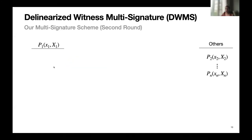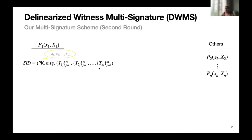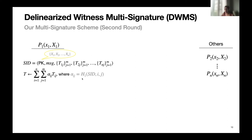The second round works as follows. Each party generates the session ID of the signing process, which consists of the public keys of the signers, the message to be signed, and all the pre-commitments. Each party has M pre-commitments. They then compute the commitment of the Schnorr scheme by multiplying each pre-commitment by a scalar alpha, then summing all of them. Alpha is defined as the random oracle output of the session ID and the corresponding index.